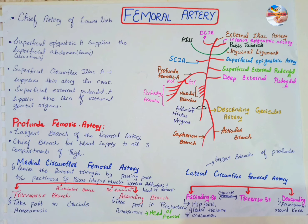The medial circumflex femoral artery leaves the femoral triangle by passing posteriorly between the pectineus and the psoas major muscles. It gives an acetabular branch and then divides into ascending and transverse branches.